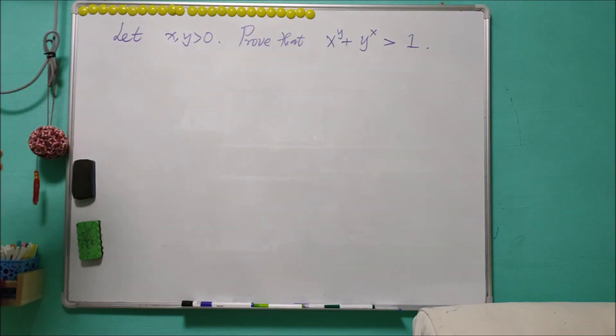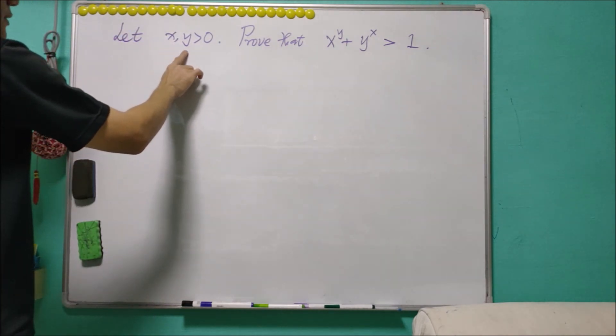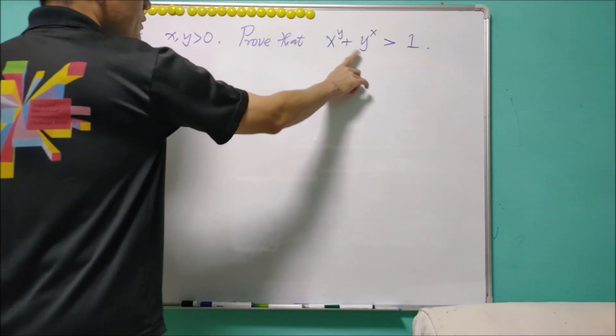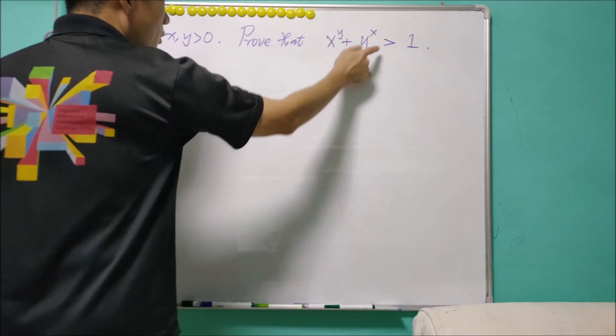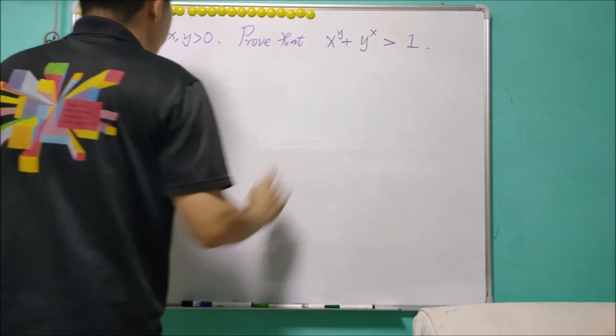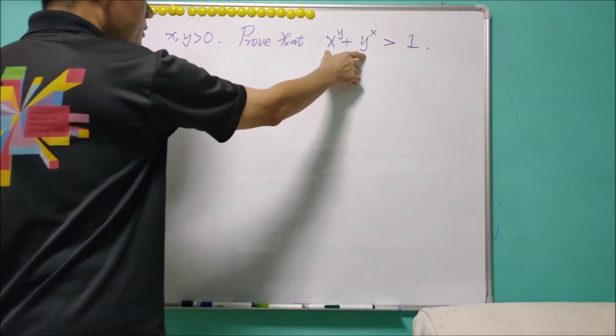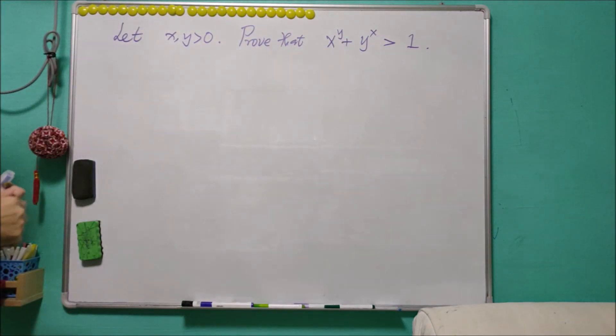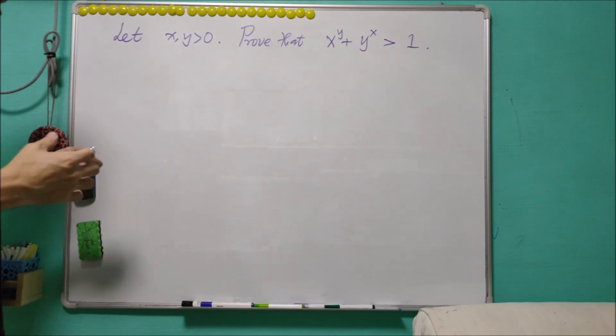Okay, so let's go back to the question. Obviously, if any of x and y is greater than or equal to one, then one of these will equal one and the other one will be positive. So overall, will be greater than one, which means that this inequality is true if any of the x or y is greater than or equal to one. So we may just need to restrict ourselves into considering the case x and y are in between zero and one.